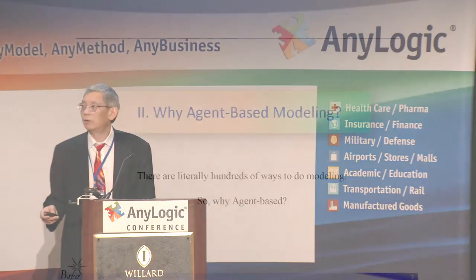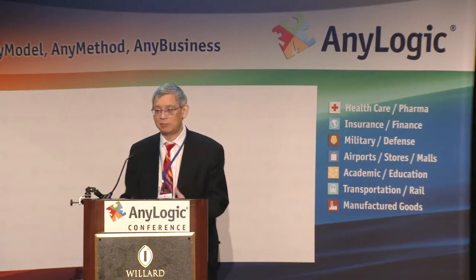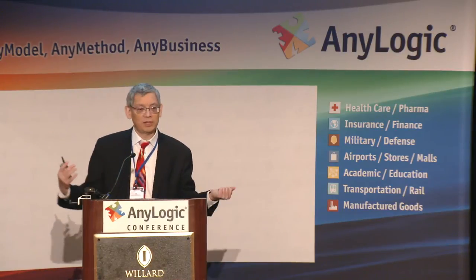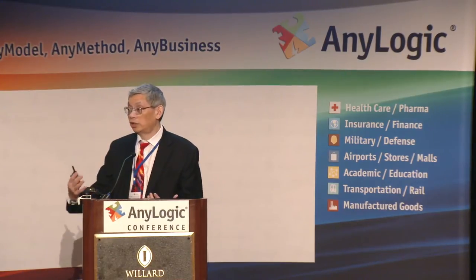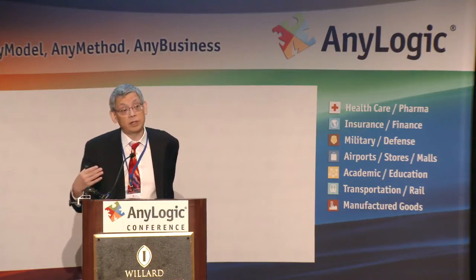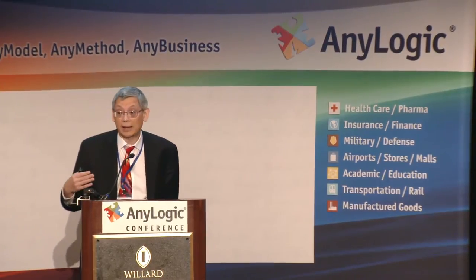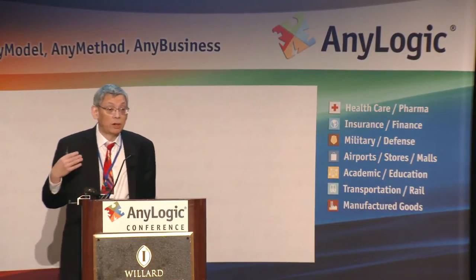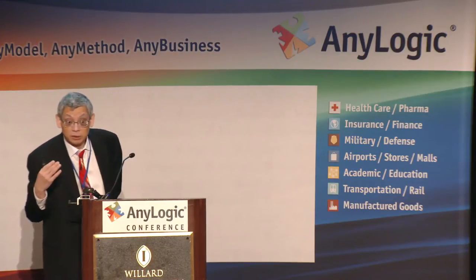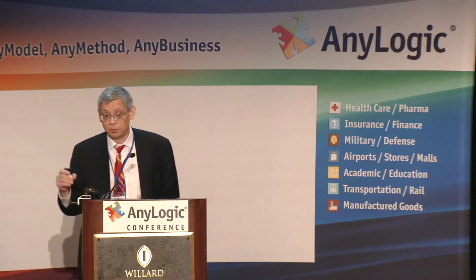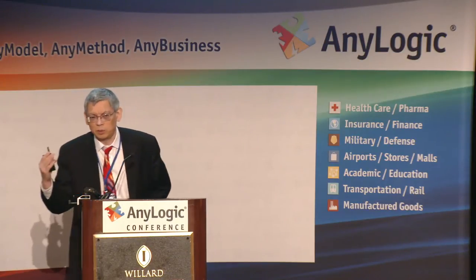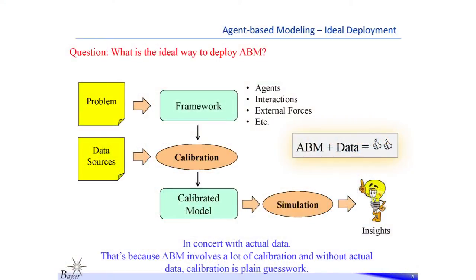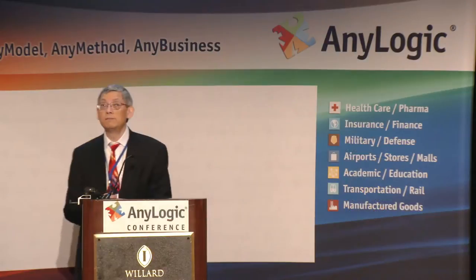Why agent-based modeling? For us, coming from the epi model, we needed motivation to choose it. One key reason is that in pharma, along with consumer packaged goods, we have lots of data. The US consumes 3 billion prescriptions a year — with about 312 million people, that's a lot per person. Having abundant data to calibrate the model was a very interesting feature of the problem and one reason we went to agent-based modeling, though not the major one.